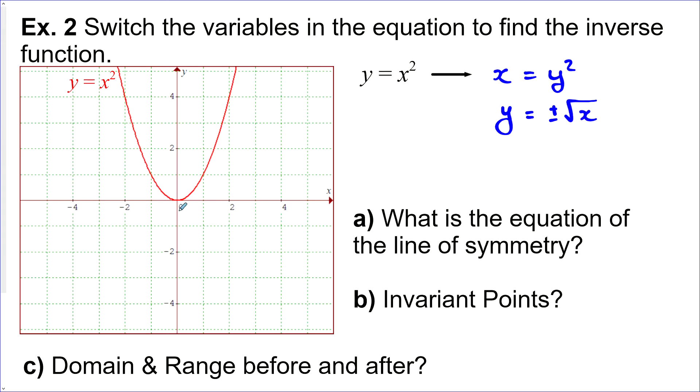We get y equals plus or minus root x. Let's give this a sketch. So square root of one is one. Square root of four is two. And plus and minus would put it down here as well. And so we'd have a sideways parabola. And this is x equals y squared. Or you can say y equals plus minus root x.